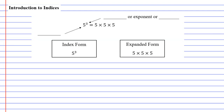There is some notation that we also need to become familiar with. Here we have 5 to the power of 3, and you'll recognize that that is the same as saying 5 times 5 times 5. Now the number 5 is called your base number. Then we have the little number to the top right, which is known either as your index, exponent, or power.